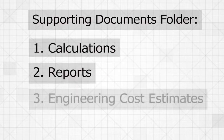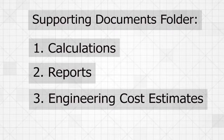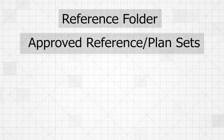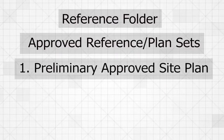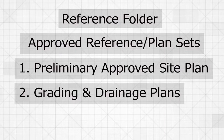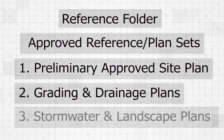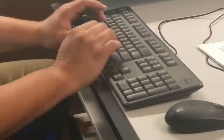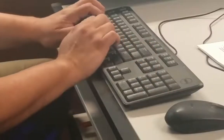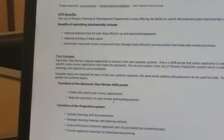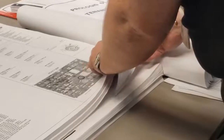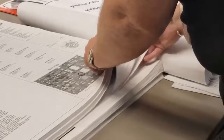The supporting documents folder includes documents such as calculations, reports, engineering cost estimates, and cut sheets. The reference folder is for approved or reference plan sets, such as the preliminary approved site plan, the grading and drainage plans, stormwater, and landscape plans. Customers often upload everything in one folder, which takes time for the reviewer to separate and organize, and therefore adds time to completing your review.